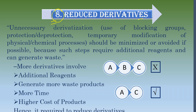The eighth principle says: reduce derivatives. As per the principle, unnecessary derivatization should be minimized or avoided if possible, because such steps require additional reagents and can generate waste. Basically, they say that if at all possible, don't increase the number of steps — that is what is called derivatization.